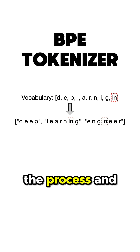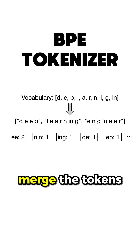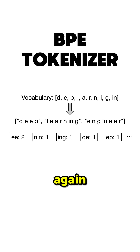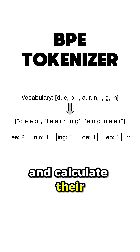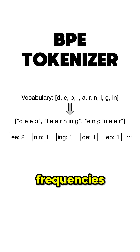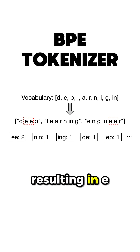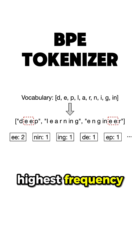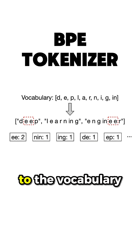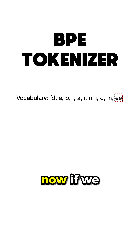Next, we repeat the process and merge the tokens again and calculate the frequencies, resulting in EE having the highest frequency. So, we add it to the vocabulary.